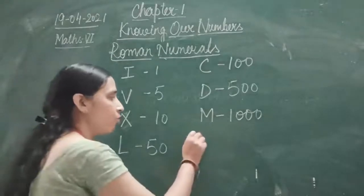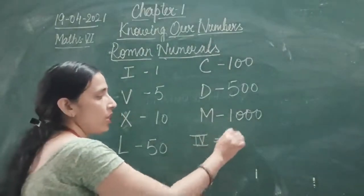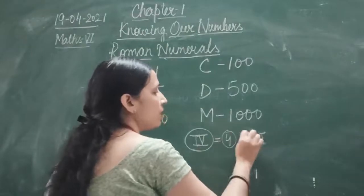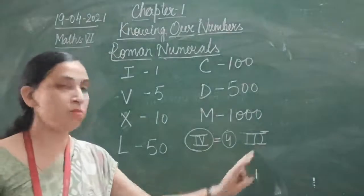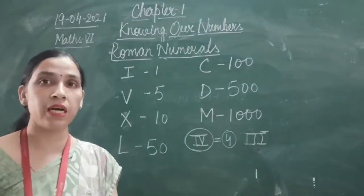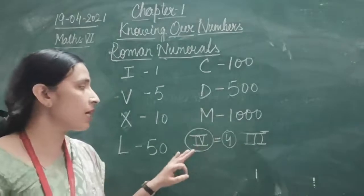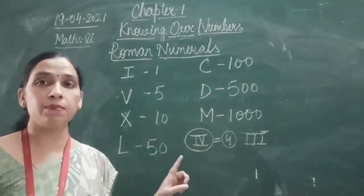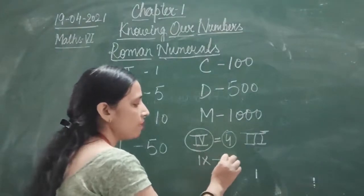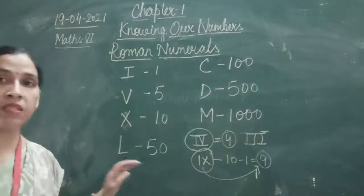If I write I before V, then from 5 I subtract 1, that will become 4. This symbol IV is the symbol for 4. I cannot be written more than 3 times — the maximum number of times I can write I is 3. I can only be subtracted from V and X. If I subtract I from X, that becomes 10 minus 1 = 9. The symbol IX is the symbol for 9.